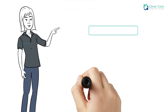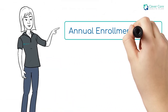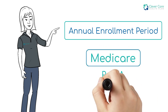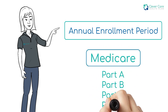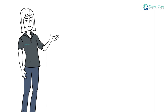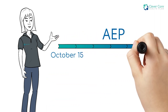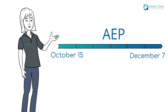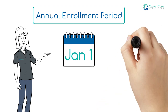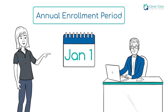Next, we have the annual enrollment period, also known as AEP. All Medicare beneficiaries have an opportunity to change their Medicare coverage options during AEP. AEP begins on October 15th and ends on December 7th. Any changes you make will take effect on January 1st of the upcoming year.